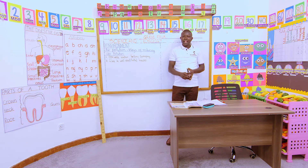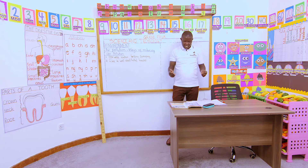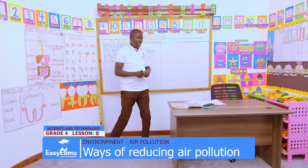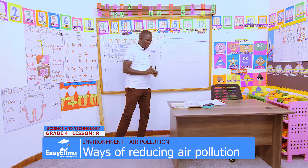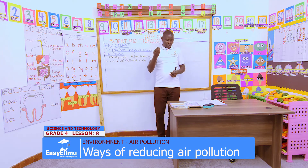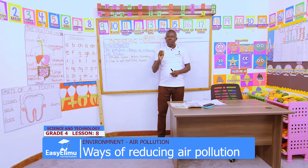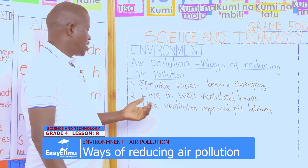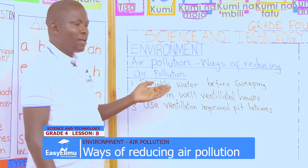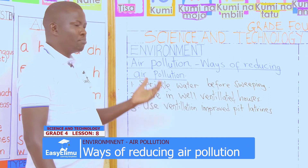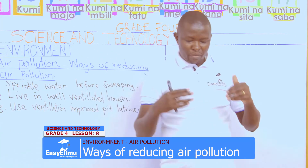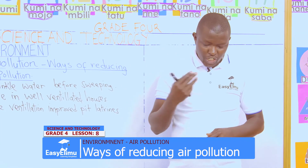Number three — another way, Victoria: use ventilation-improved pit latrines. How do you improve your latrine? Make sure you look for a lid to cover the pit latrine so that the foul smell may not come out. We use ventilation-improved pit latrines so that the foul smell may get out through the ventilation.